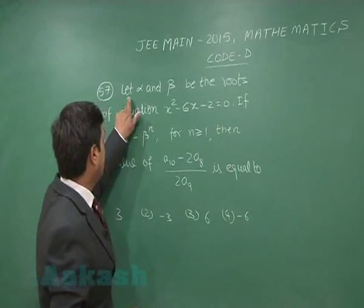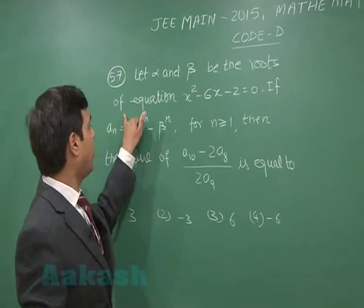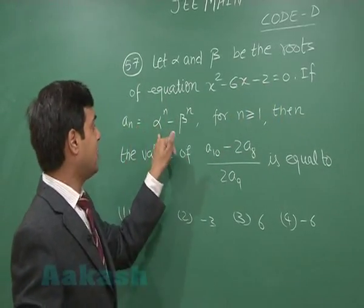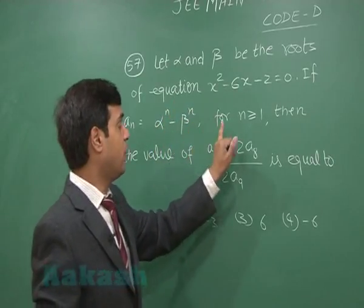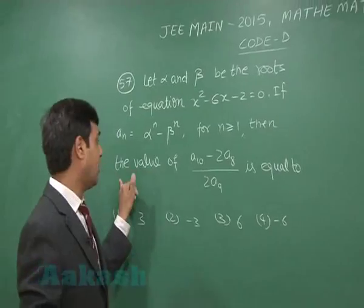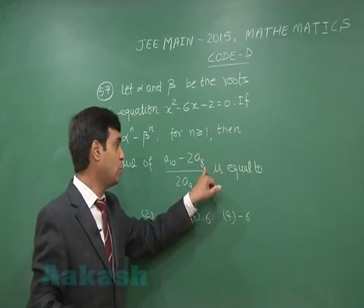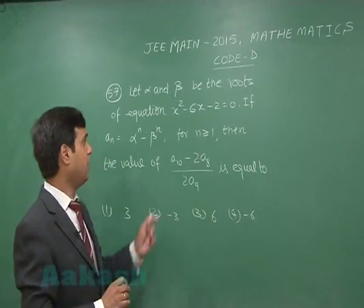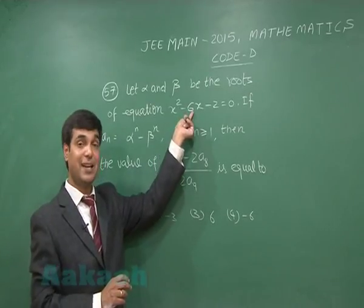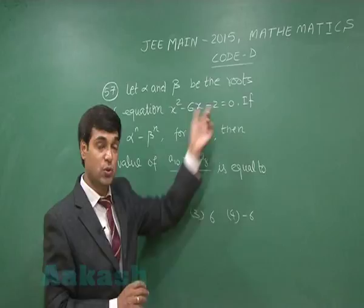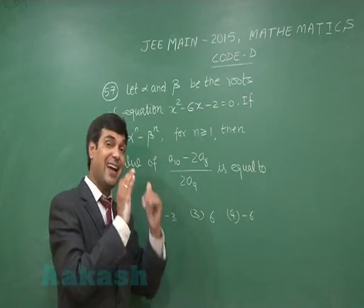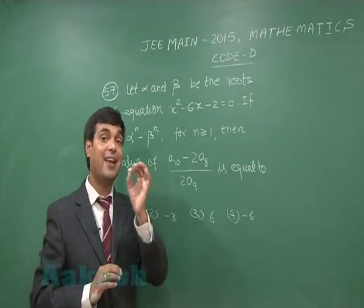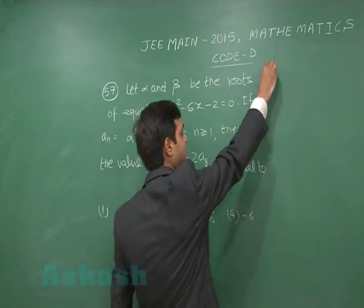Question 57: Let alpha and beta be the roots of x²−6x−2=0. If a_n = alpha^n − beta^n for n ≥ 1, find the value of (a10 − 2a8) / (2a9). Sum of roots alpha+beta = 6, product = −2. By multiplying through by alpha^(n−1) and beta^(n−1) we can create the recurrence relation.